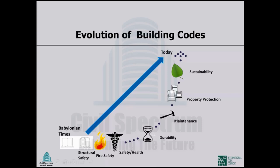Ease of maintenance has become a consideration in building codes — just like shirts that don't need ironing, we can design for easy maintenance. Property protection, while secondary to life safety, is not overlooked and is receiving increasing attention. More recently, sustainability has become a significant consideration. Concrete buildings now use significant amounts of fly ash instead of Portland cement — just one basic example of the many sustainability considerations that have been incorporated.